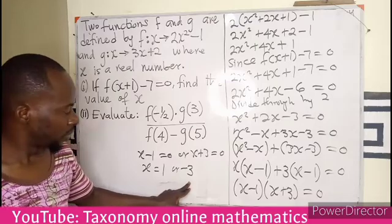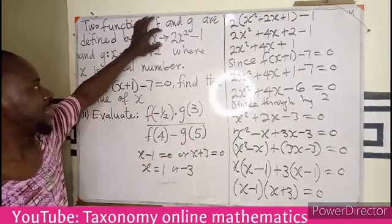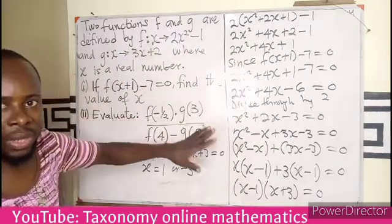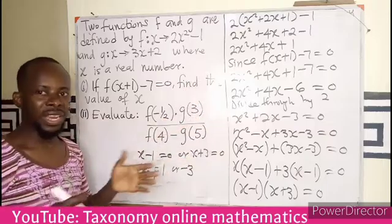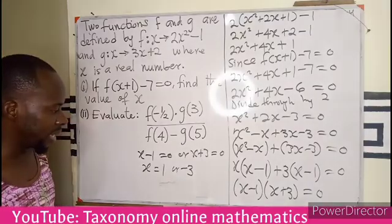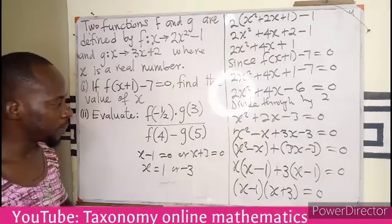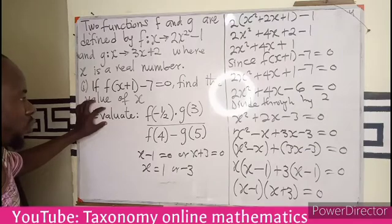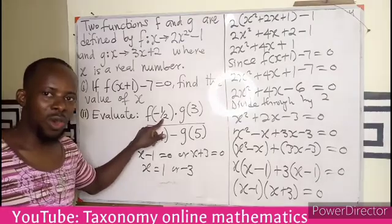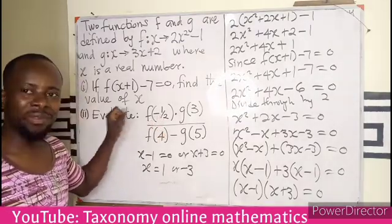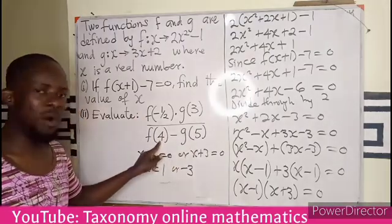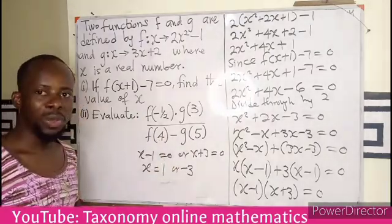I believe we have gotten it. You take your time — we started with a function relation but ended up in a quadratic equation. Expand, find the values, perform your integer operations, and you finally get to your answer. Now we are moving to the second aspect: finding the image of x as negative half for f, and images of 3 and 5 for g, and 4 for f.